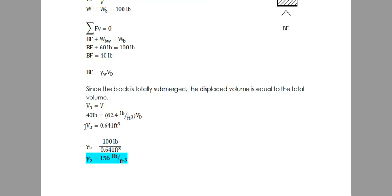Gamma of the block equals the weight of the block, which is 100 pounds, divided by the volume that we solved earlier using the buoyant force. The gamma of the block, or the specific weight of the block, is equal to 156 pounds per cubic foot.